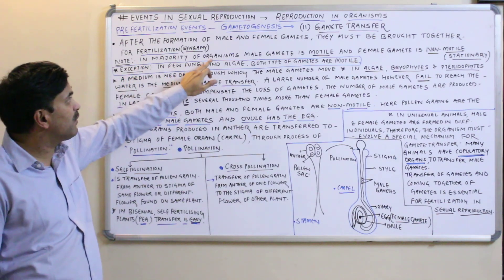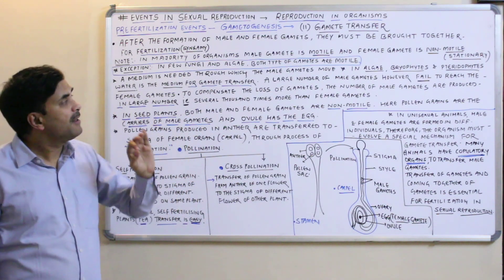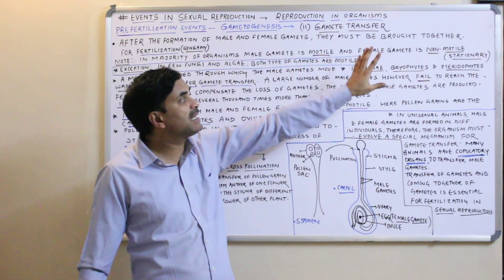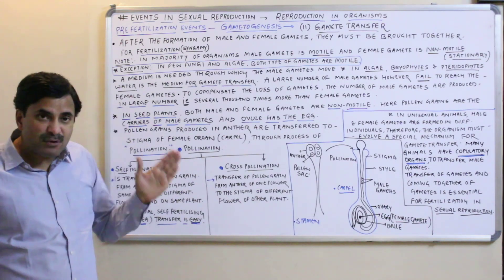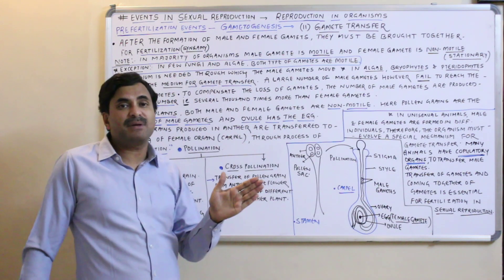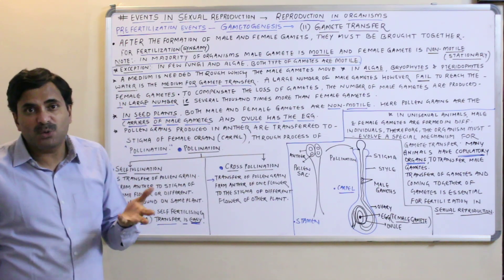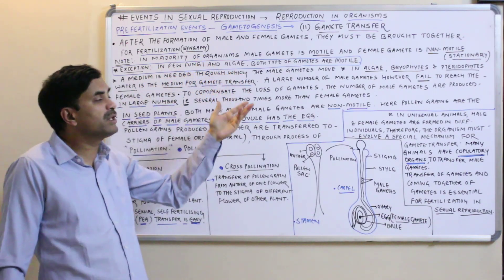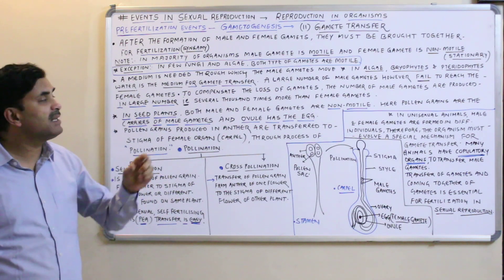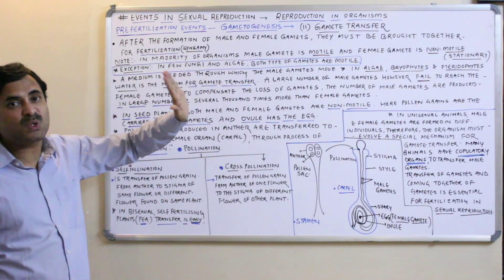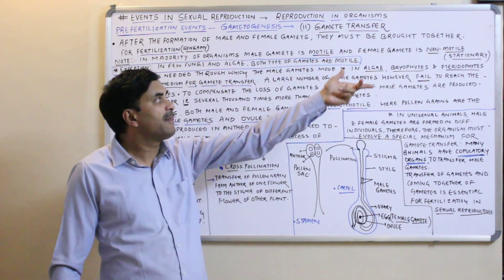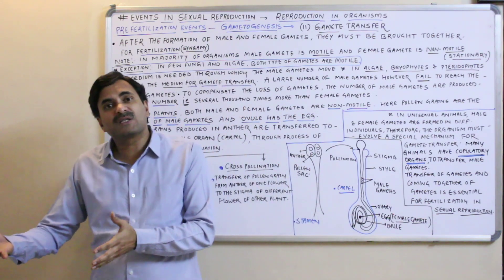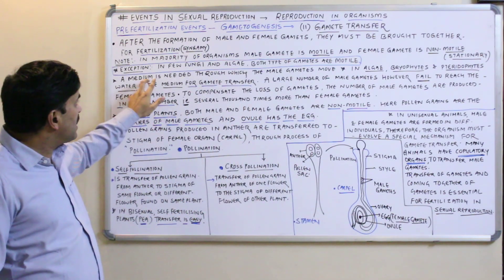In the majority of organisms, the male gamete is motile and the female gamete is stationary — that is, non-motile. However, there are exceptions: in a few fungi and algae, both types of gametes are motile, but this is not a common phenomenon. In human beings, for example, the egg is non-motile while the sperm has a tail and is motile.